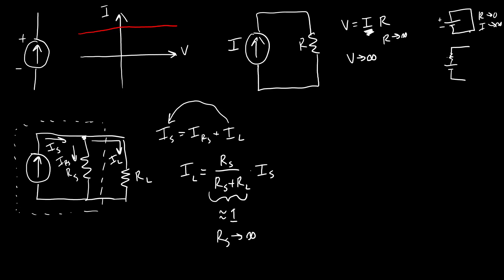So unlike the voltage source case where you wanted the source resistance to be very close to zero, in the current source case, you want the source resistance of this model to be very close to infinity. So that way you have very little current going through this internal resistor and most of your current is going through your external load.